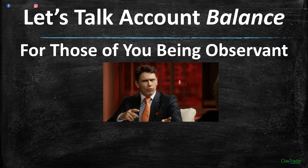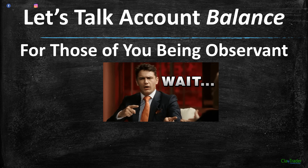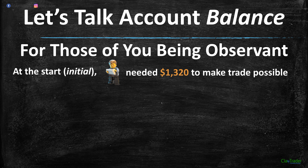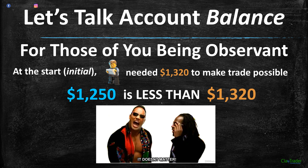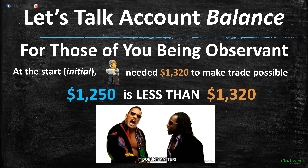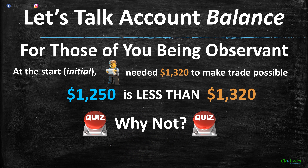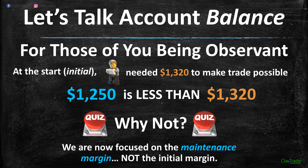For those being observant: wait — at the start he needed $1,320 to make the trade, and $1,250 is less than $1,320. But it doesn't matter. Why not? Because we are now focused on the maintenance margin, not the initial margin. We've made the transition. Initial was just to get us past the close and through the liquidation zone. Now that we're past there, it's all about maintenance margin. That's why the $1,320 at this point no longer carries any relevancy.